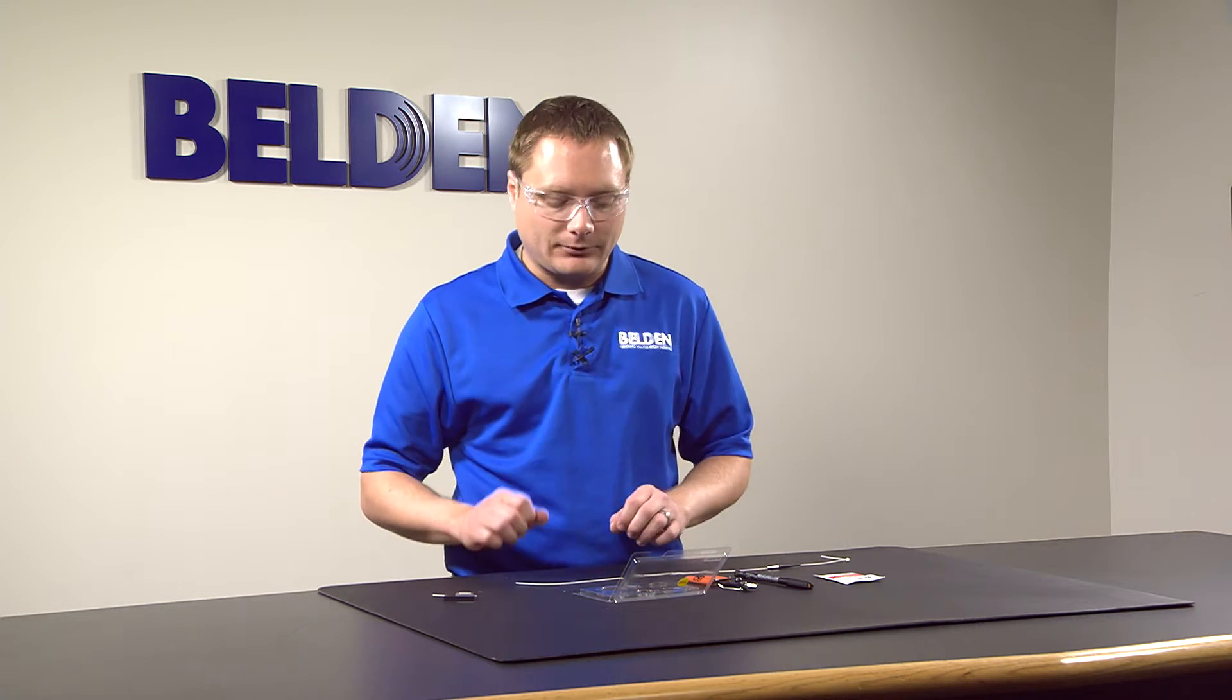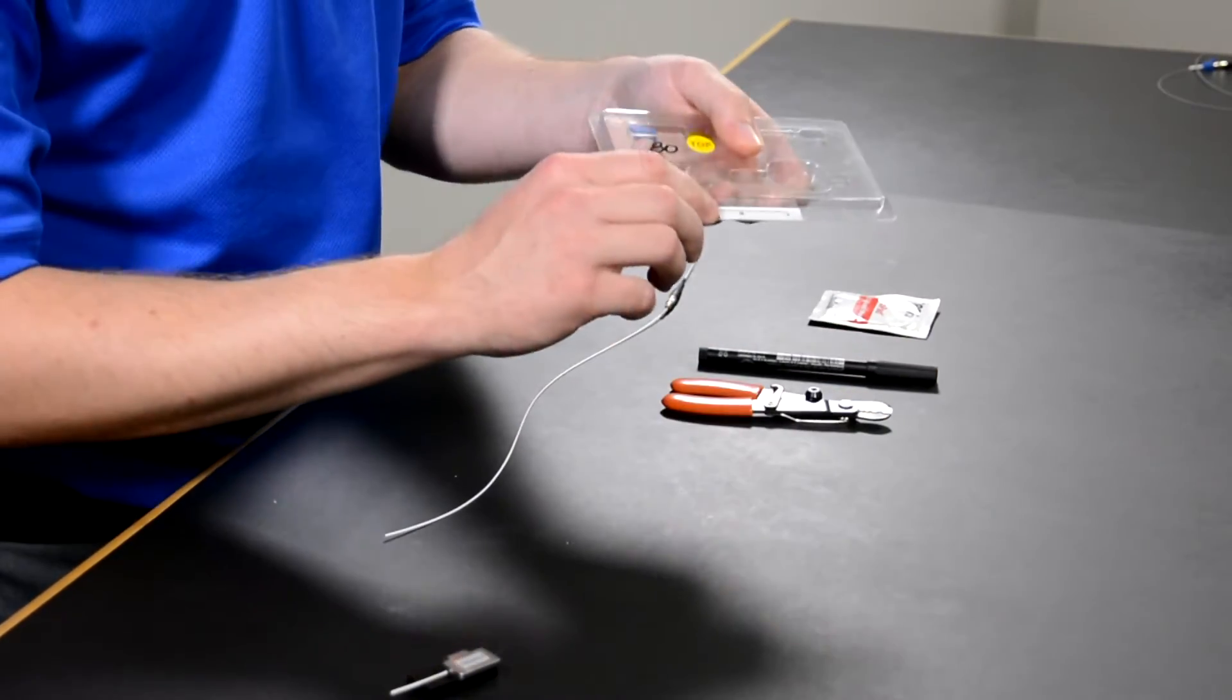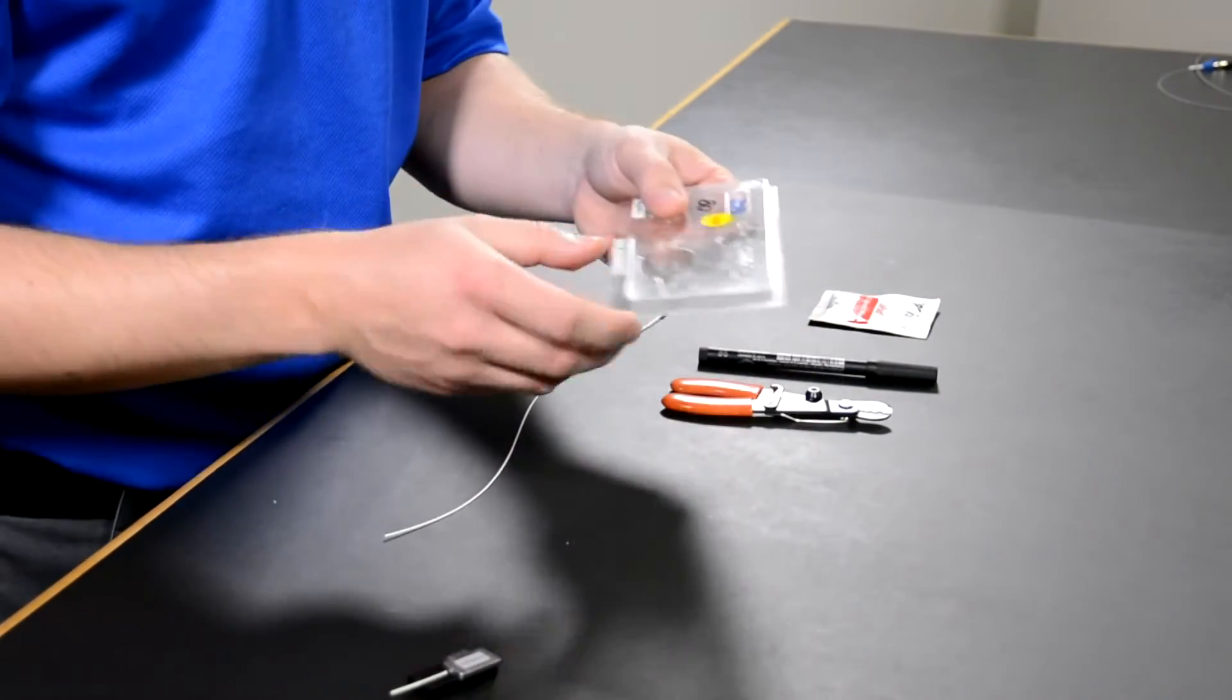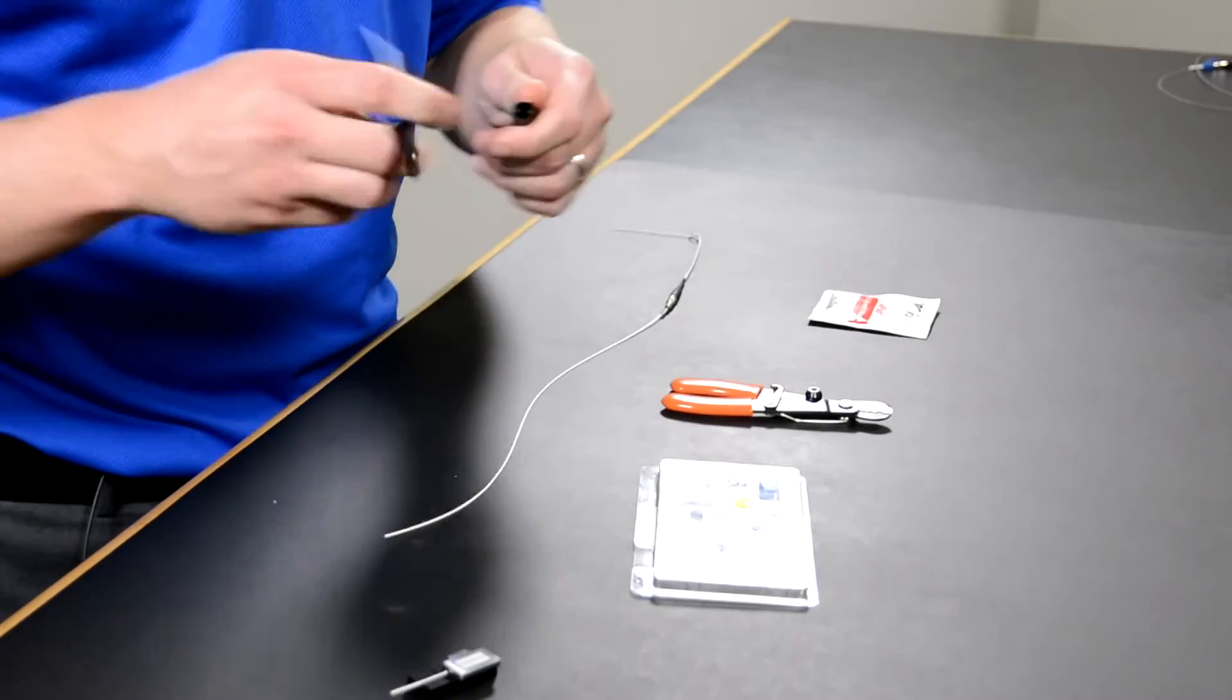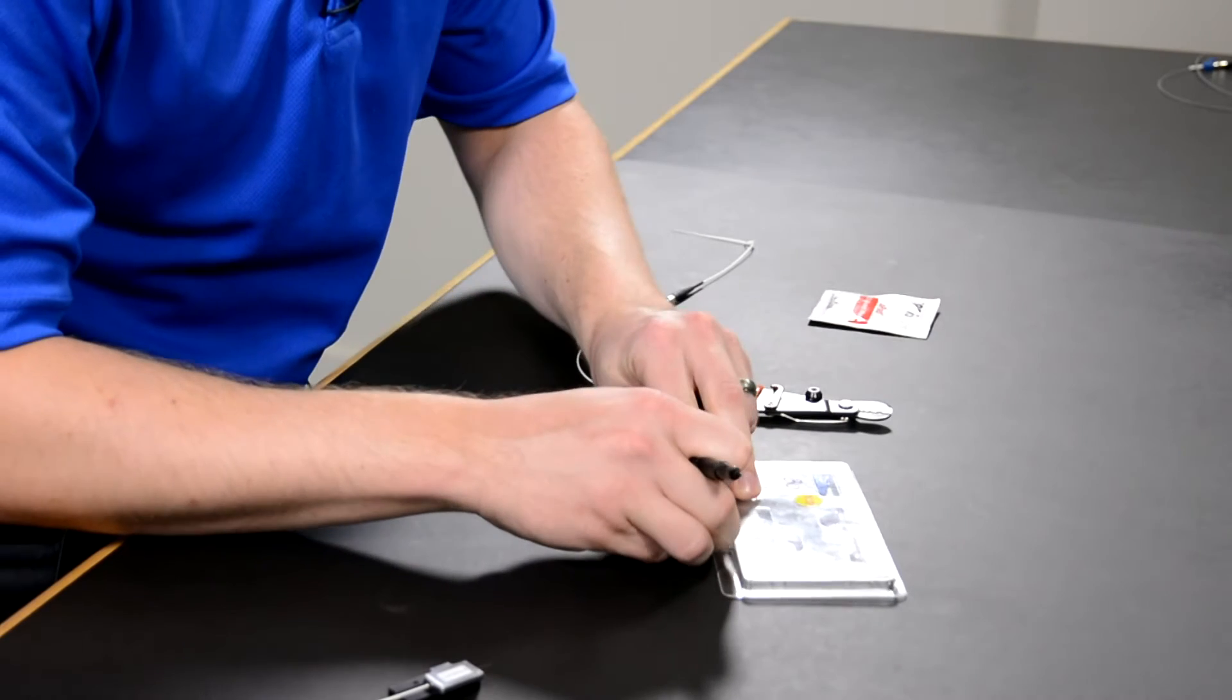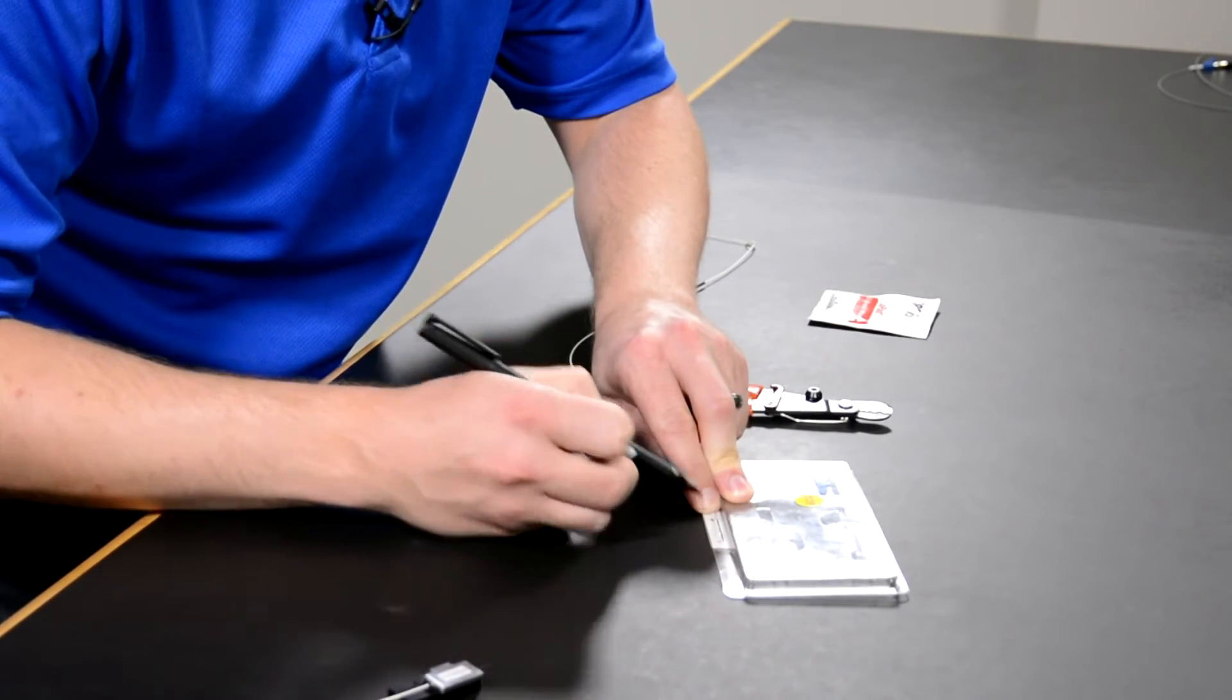We're ready to mark the fiber. Each FX Fusion connector package comes with a scale on the package. For the LC 900 micron that we're doing here, we want to mark it at 25 millimeters. I will take my marker, align my fiber, the end of my fiber, at zero, and make one mark at 25 millimeters.